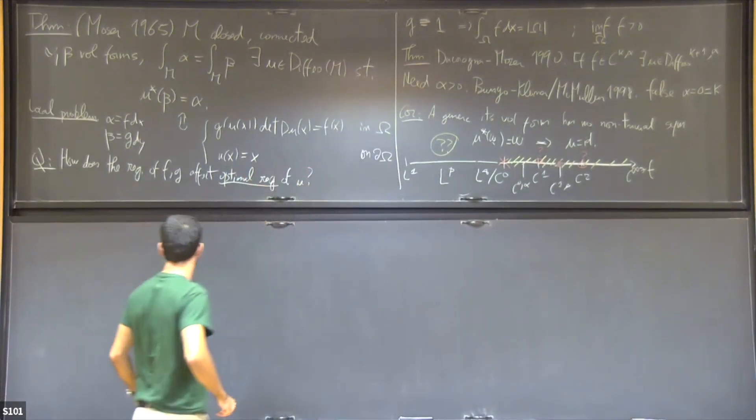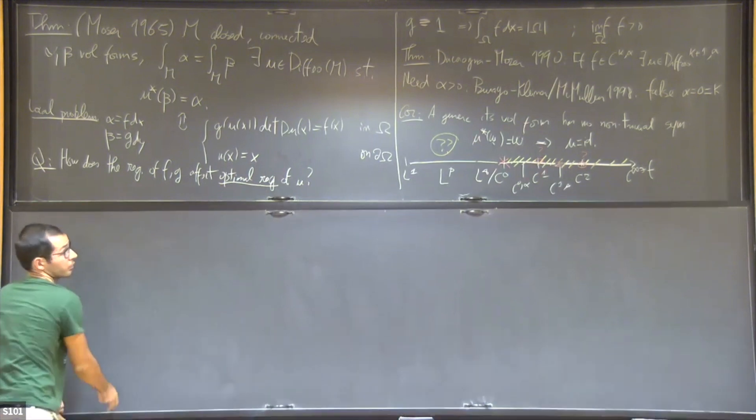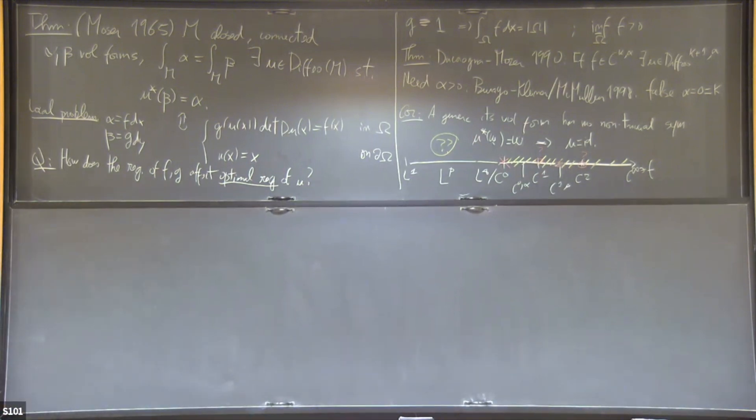I want to talk about solutions now when f is just an L^p function. Does it still make sense to ask strictly positive? Sure, in an almost everywhere sense, the essential infimum is uniform positivity. So the question is, what happens there? Clearly, I cannot find Lipschitz solutions. For instance, if I have an L^1 density, I have to make sense of my problem in this regime.